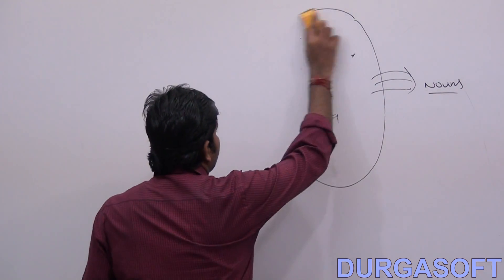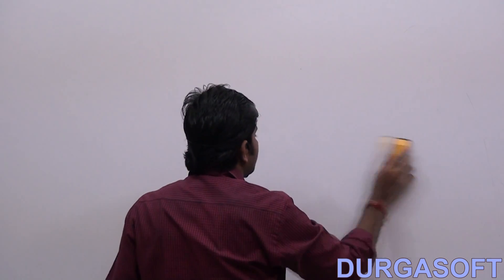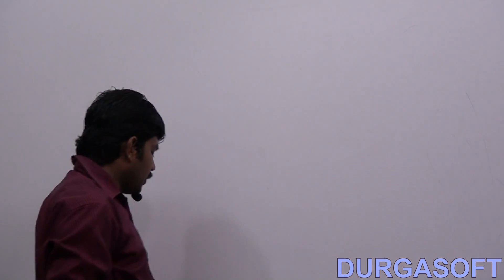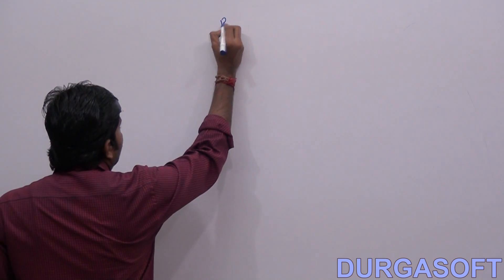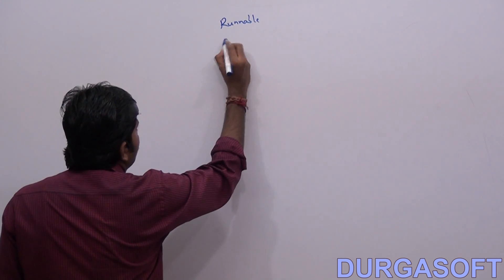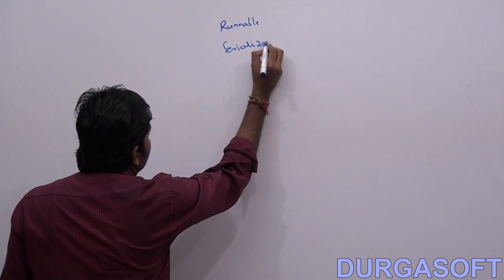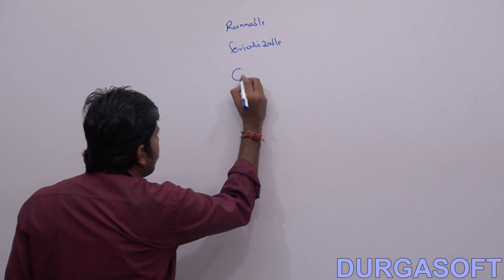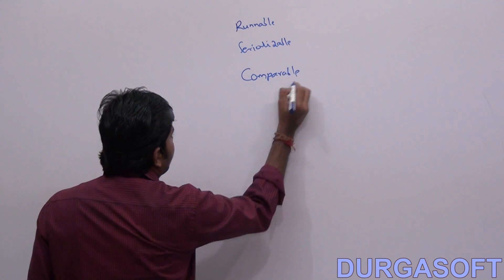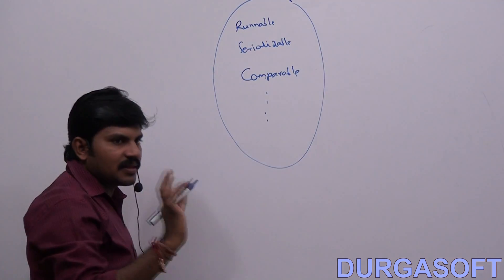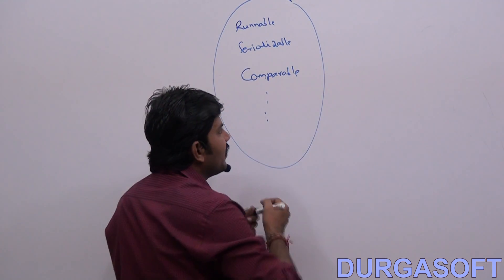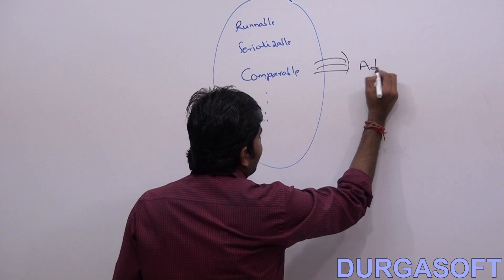Coding standards for interfaces. Can you spell out some interface names? Runnable is an interface name. Serializable is an interface name. Comparable is an interface name. Do you know, in English, these things are by default considered as adjectives.